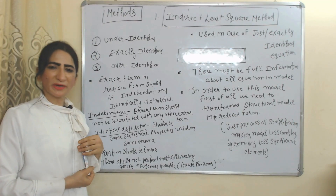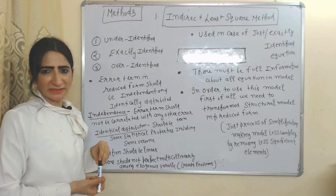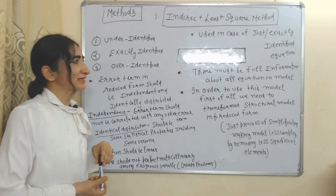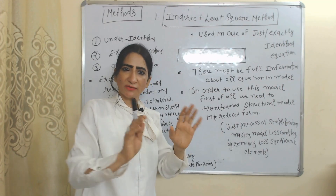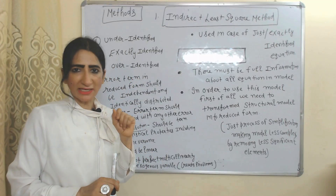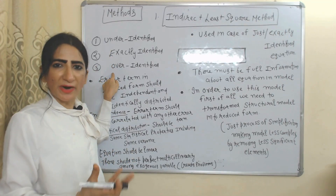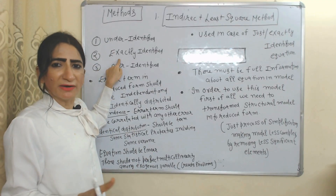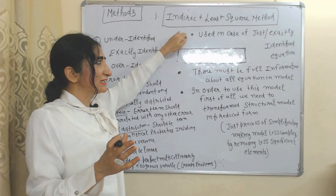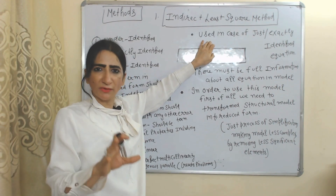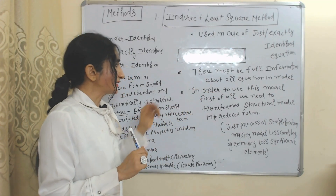Now we are going to talk about an important method of simultaneous equations. The first important method is the Indirect Least Squares (ILS) method. We mainly use ILS in the case of just-identified or exactly-identified equations. We have discussed three types of equations: under-identified, over-identified, and exactly-identified — where we have exactly the information we need.